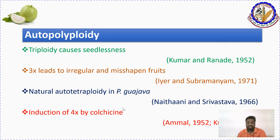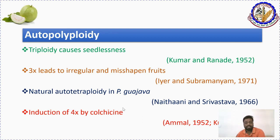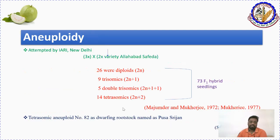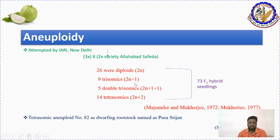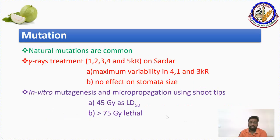Polyploid breeding includes autopolyploids, trisomics, and tetrasomics. Because of seedlessness from triploidy, attempts have been made, but no polyploid variety has been developed so far. Researchers identified 73 aneuploid hybrids, of which 14 are tetrasomics and 9 are trisomics. One variety, Aneuploid 82, is a dwarf rootstock — it is a tetrasomic and dwarfing type, released as Pusa Srijan variety.